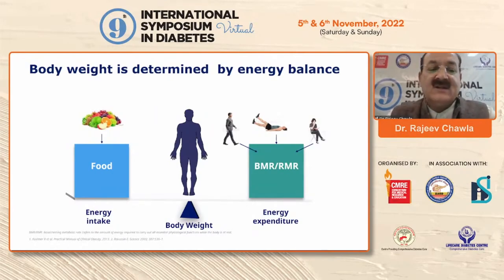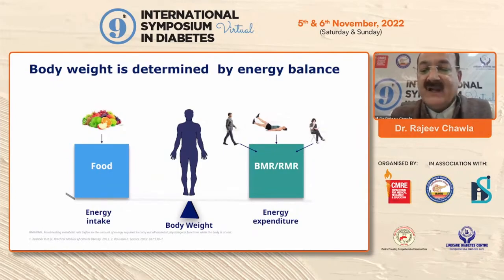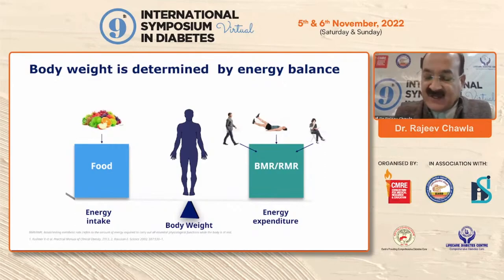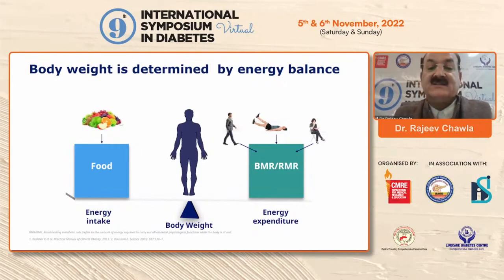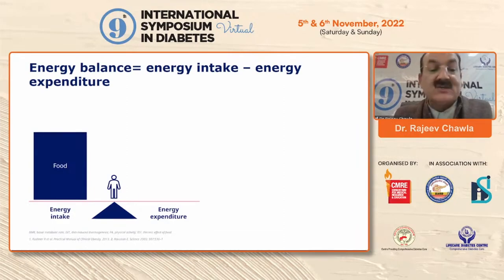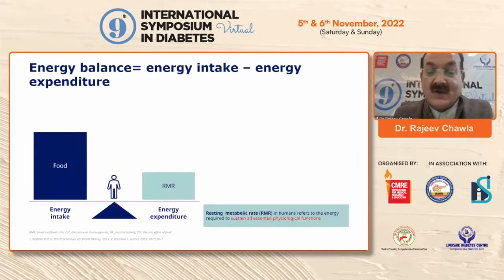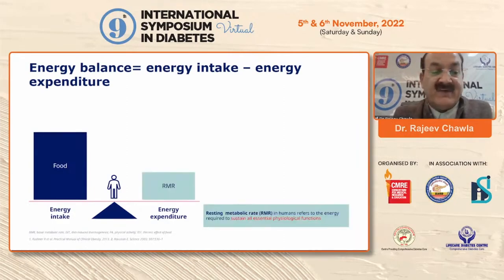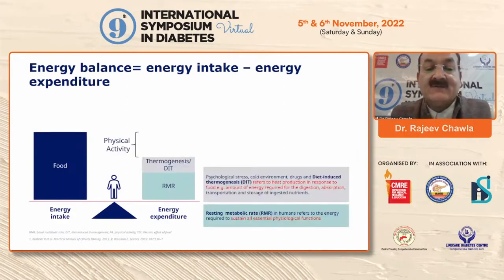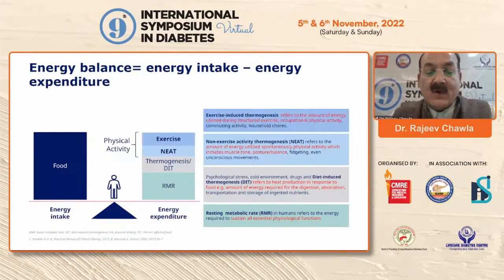Body weight is obviously going to be determined by an energy balance — whether food intake is not too much, or we need to burn more calories. We need to have energy expenditure: a good basal as well as exercise-induced thermogenesis, so as to make sure there is not going to be weight gain.